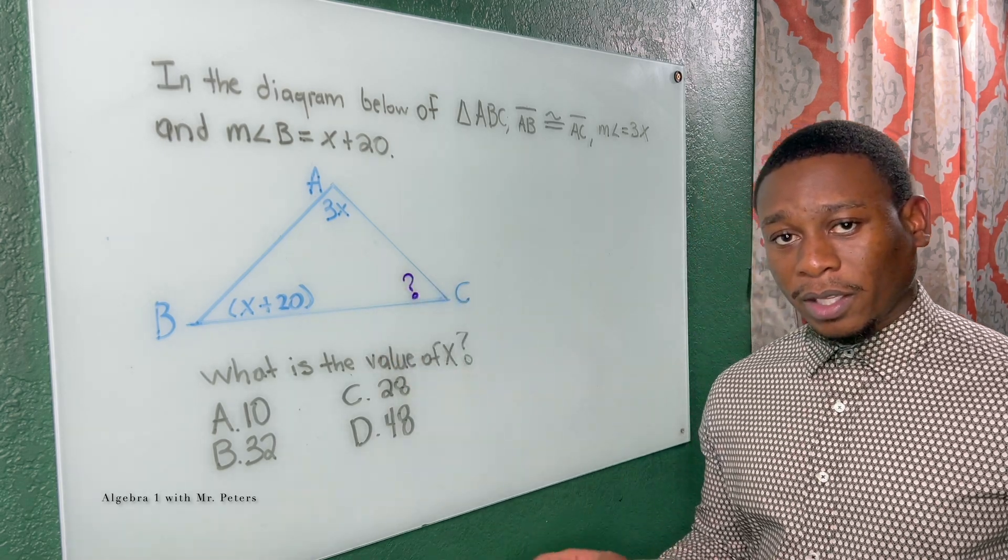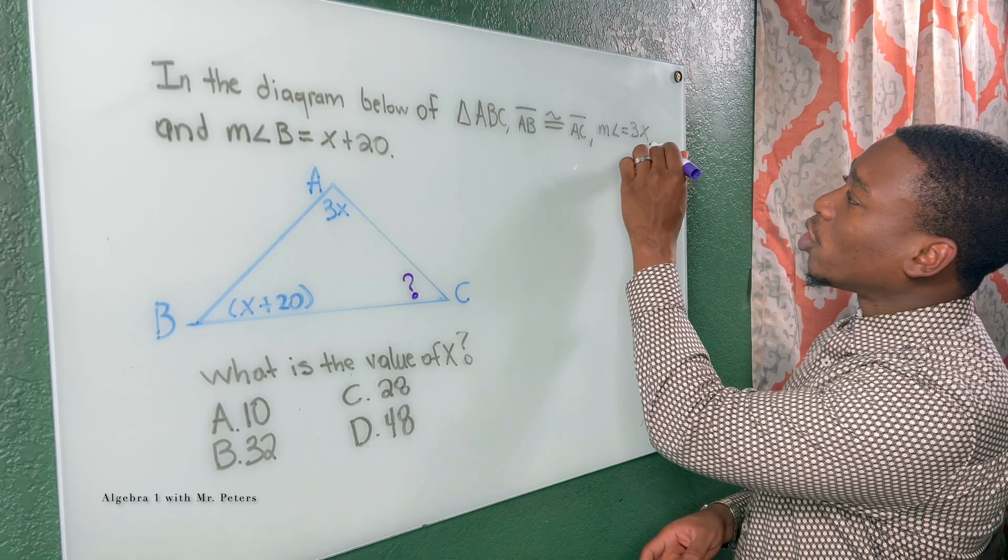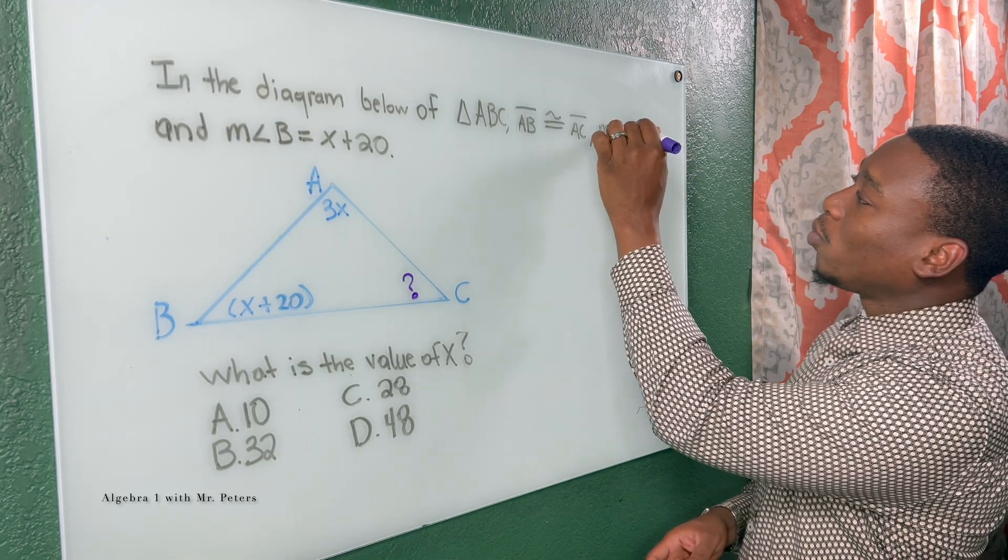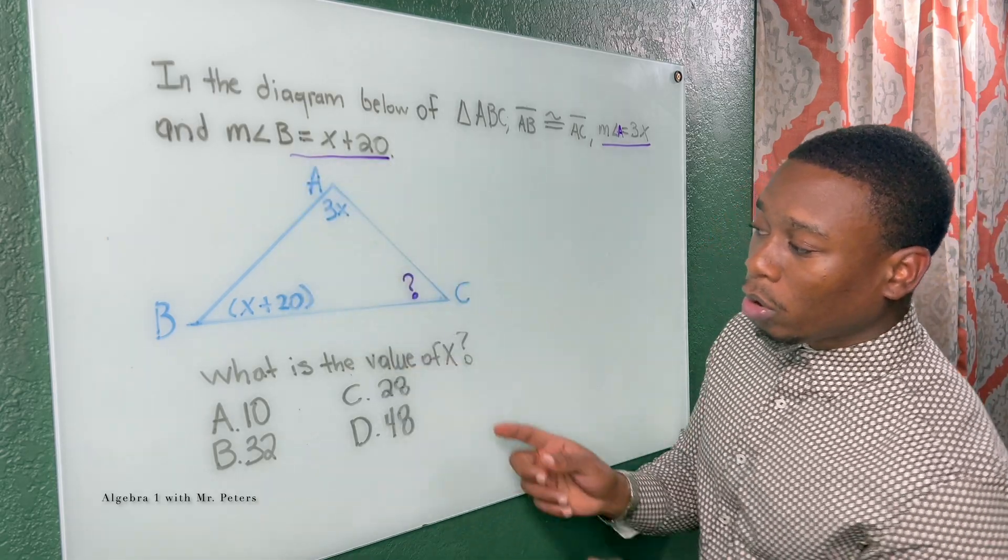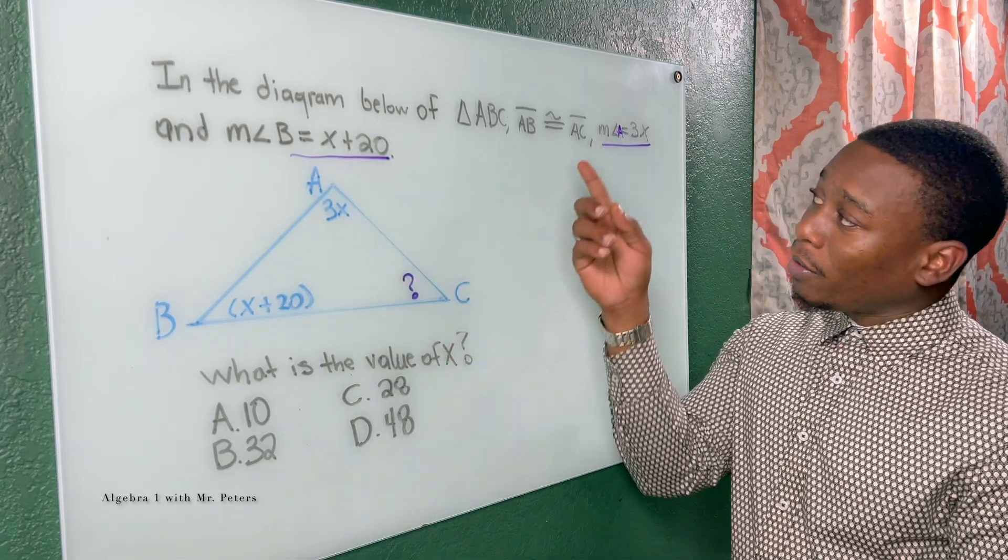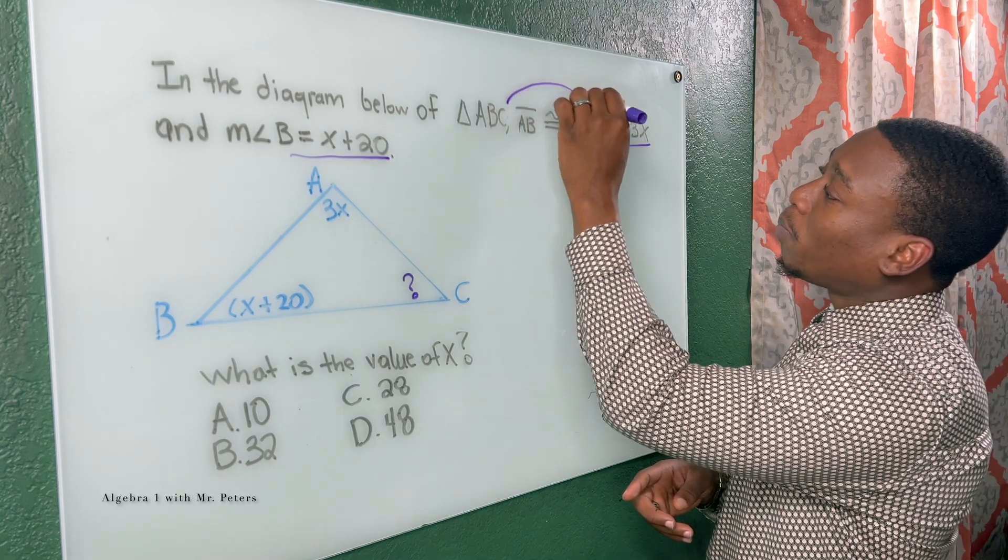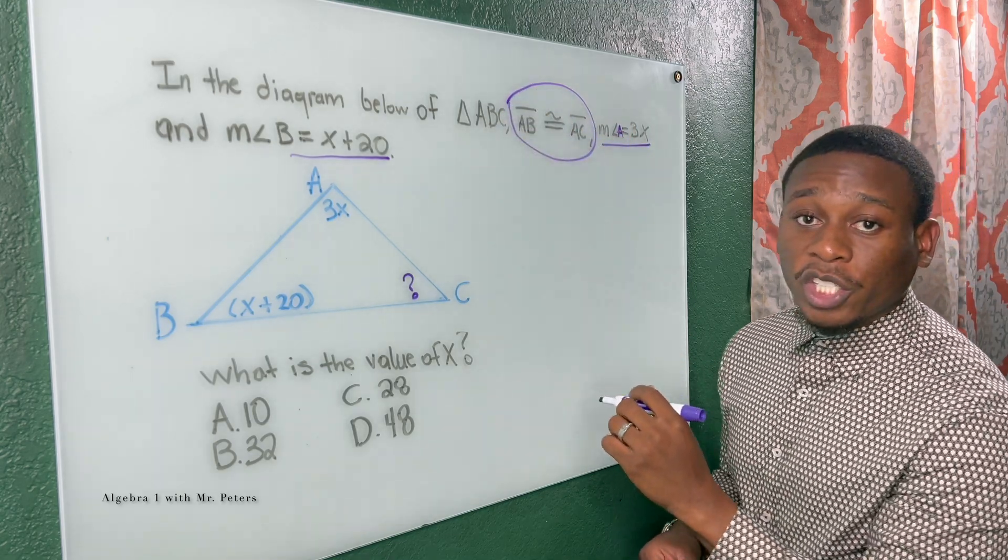So in a problem like this, we already know they gave us what angle A is. Oops, forgot my A. And they gave us what angle B is. So what we're looking for is angle C, and this right here is the most important piece of information. This is our tip.